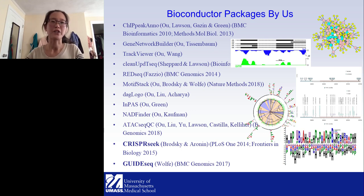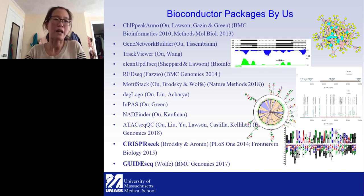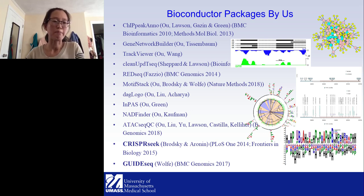Here are the dozen packages we have developed, ranging from annotation, visualization, motif alignment, machine learning algorithms, a ChIP-Seq QC quality assessment tool, and genome editing software tools. The first Bioconductor package we developed is called ChIPpeakAnno, for integrated analysis of ChIP-Seq data. Due to time limits, I won't go through all packages — feel free to email me with questions. Today I'm going to focus on two packages: CRISPRseq and GuideSeq for the CRISPR-Cas9 genome editing system.